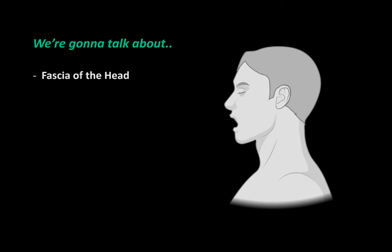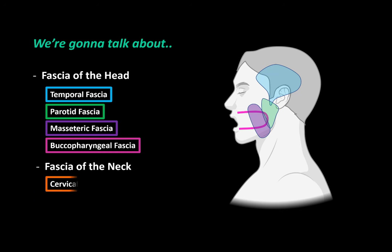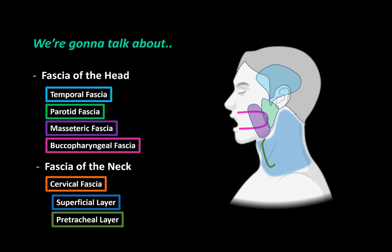So those are the 3 types of fascia. In this video, we're first going to look at the fascia in the head, which consists of the temporal fascia, the parotid fascia, the masseteric fascia, and the buccopharyngeal fascia. Then we will cover the fascia of the neck, called the cervical fascia. The cervical fascia is divided into 3 main layers: the superficial layer located under the platysma, the pretracheal layer covering the infrahyoid muscles, and the prevertebral layer covering the deep neck muscles.